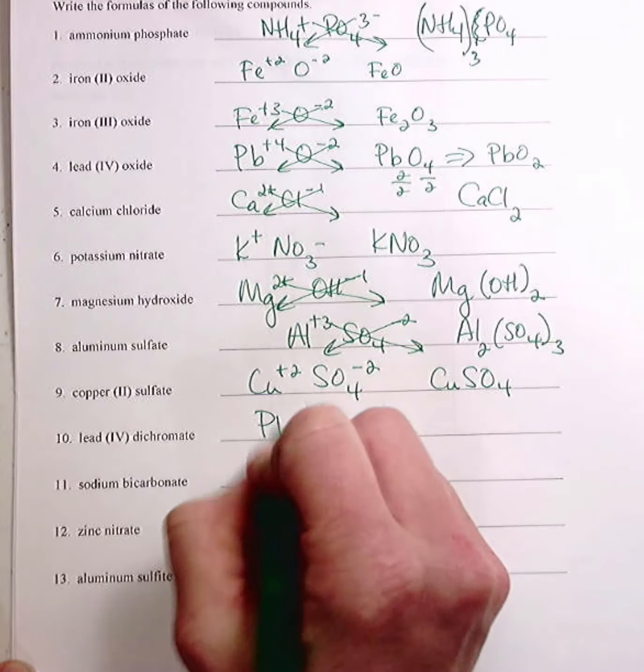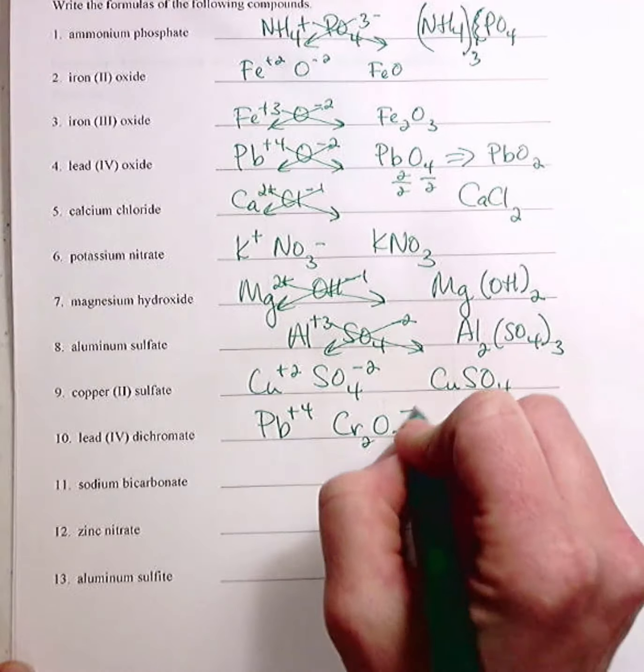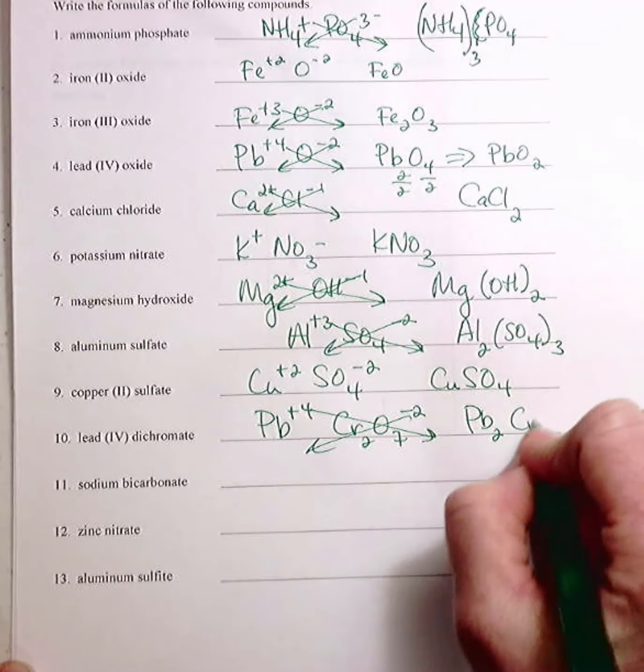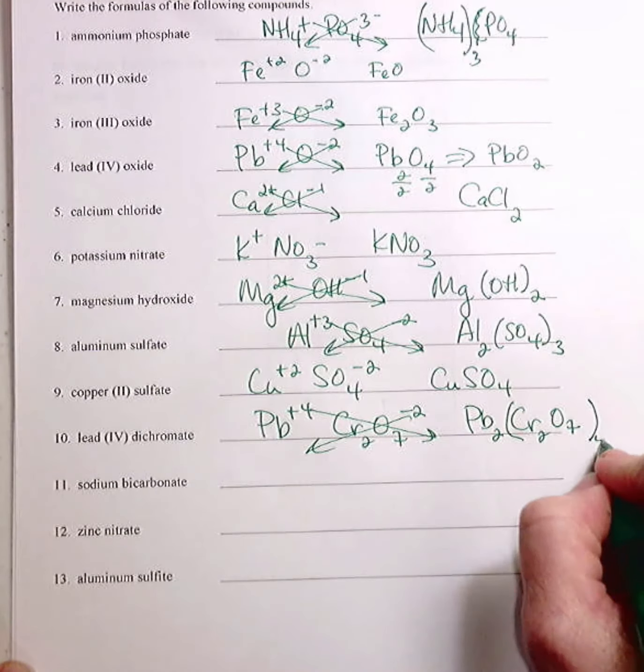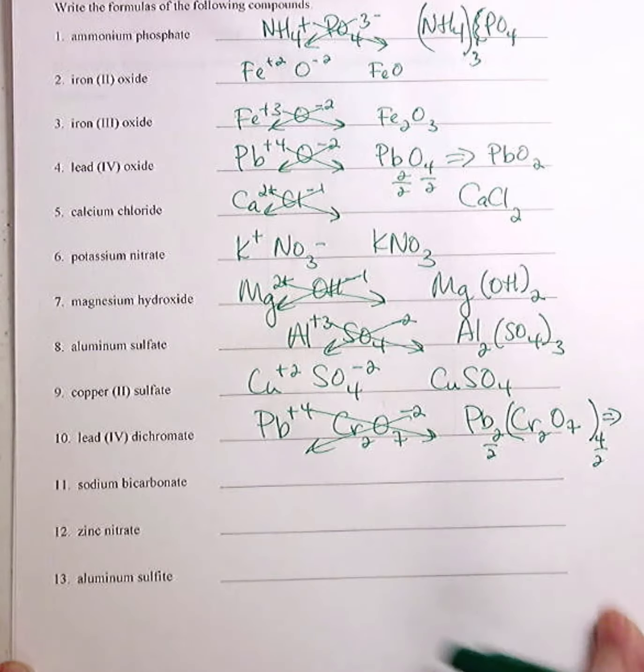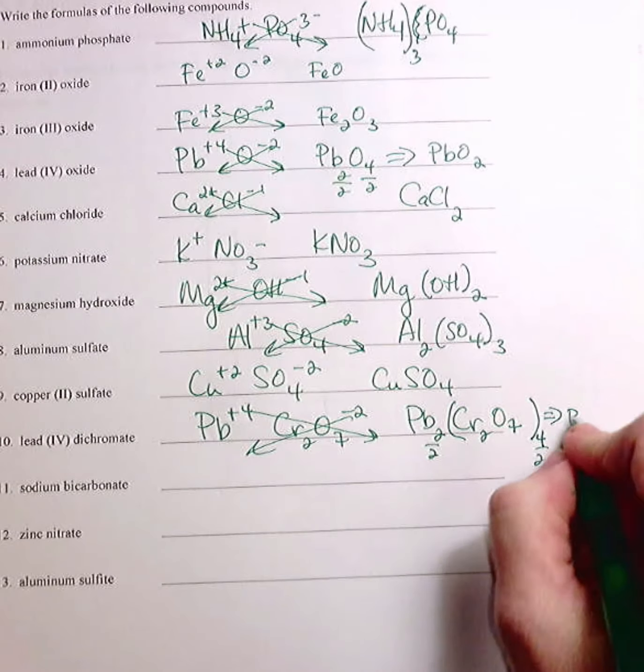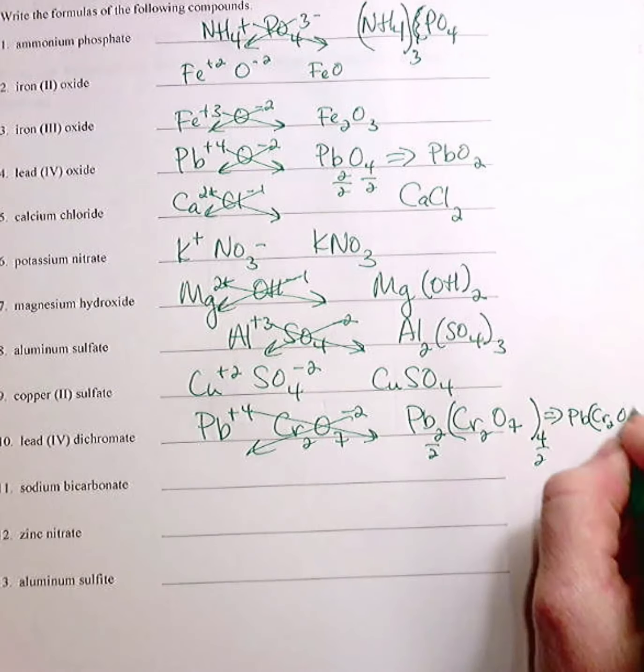All right, lead four dichromate, so Pb plus four, Cr2O7 minus two, so it's Pb2, Cr2O7, four, and then this simplifies down to Pb, Cr2O7, that's just two.